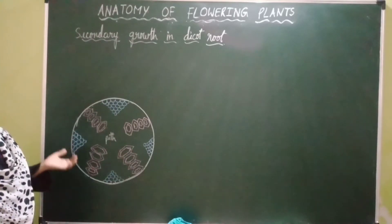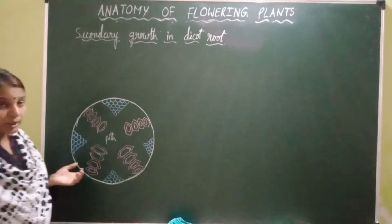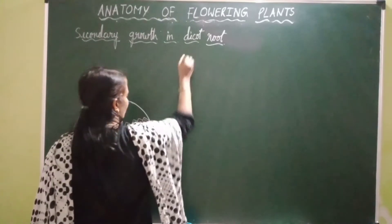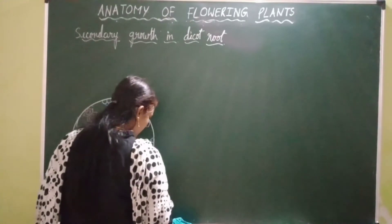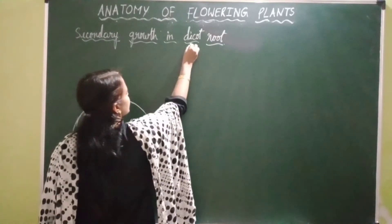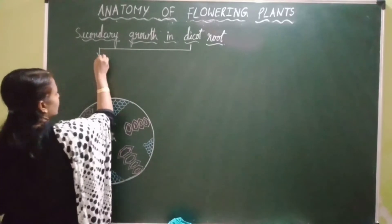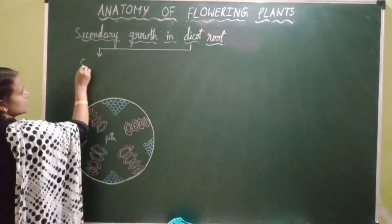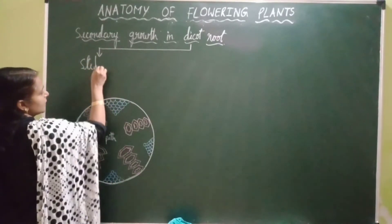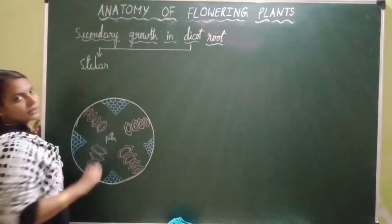Let's start with secondary growth in dicot root. In dicot root, secondary growth occurs by stelar secondary growth, which is the secondary growth that occurs inside the stele.